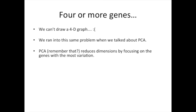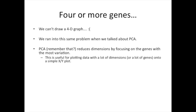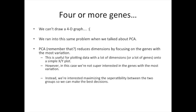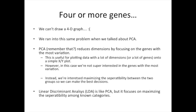PCA, if you can remember about it, reduces dimensions by focusing on genes with the most variation. This is incredibly useful when you're plotting data with a lot of dimensions, or a lot of genes, onto a simple XY plot. However, in this case, we're not super interested in the genes with the most variation. Instead, we're interested in maximizing the separability between the two groups so that we can make the best decisions. Linear discriminant analysis, LDA, is like PCA. It reduces dimensions. However, it focuses on maximizing the separability among the categories.